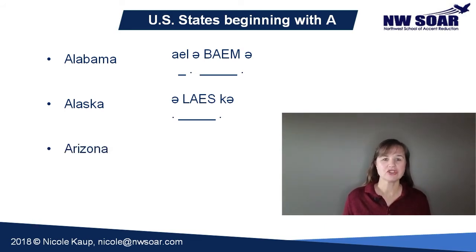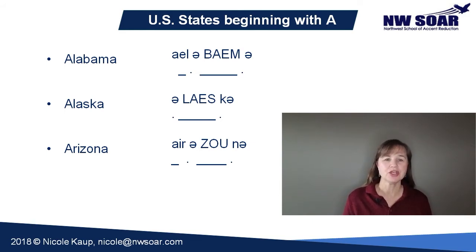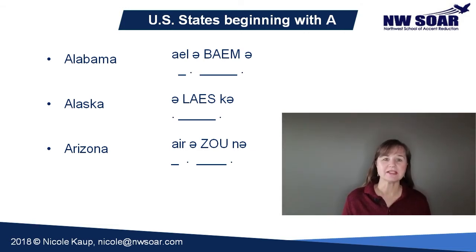Now Arizona. There are two schwas in this one too. The stress falls on the third syllable, 'zone.' The American long O sound is not a simple O like it is in many languages — it is in fact a combination of two vowel sounds, both an O and a U. Stretch out that sound and glide from O to U. That is the sound the O makes in Arizona. Arizona.